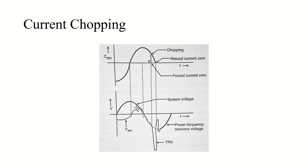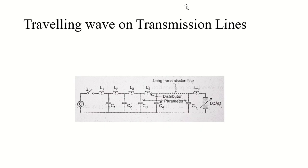That was current chopping. Now, travelling waves on transmission lines — one more topic to discuss. There are different methods to represent a long transmission line. Using the nominal pi and nominal T methods, most of the time we use the nominal pi method. In this figure the long transmission line is represented by a nominal pi circuit with distributed L and C parameters — inductors and capacitors.